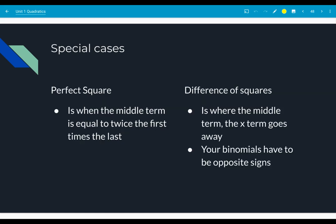So the special cases are going to be perfect squares and difference of squares. Perfect squares is where the middle term equals twice the first term times the last term. A perfect square is when you're going to have x plus 2 squared, or something like that. You're only going to have one binomial, but it's squared. Difference of squares is where the middle term goes away. So instead of ax squared plus bx plus c, you just have ax squared plus c. And to get that to happen, your binomial factors have different signs, which is why we call it a difference of squares.